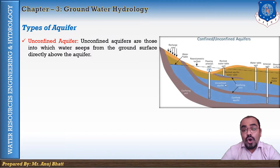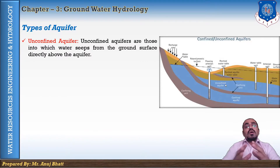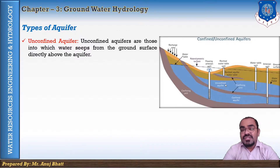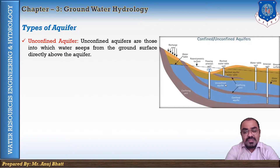An unconfined aquifer is also known as a free aquifer, water table aquifer, or non-artesian aquifer. The water table is not a stationary surface — it rises when more water enters the aquifer through natural or artificial recharge, and drops when recharge is less.